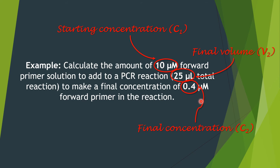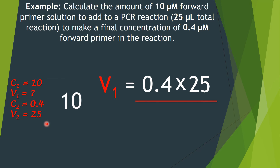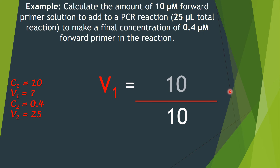We need to work out V1 using the C1V1 equation. Plugging in the numbers, we rearrange to divide by 10. Doing 0.4 times 25 equals 10, and 10 divided by 10 equals 1. So the answer is 1 microlitre.